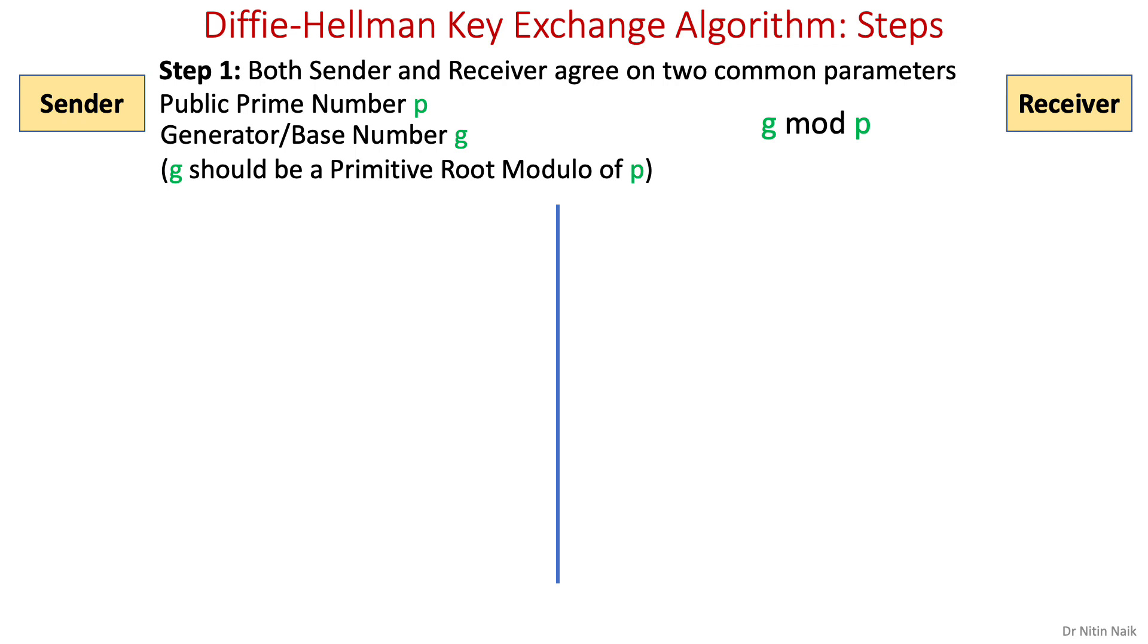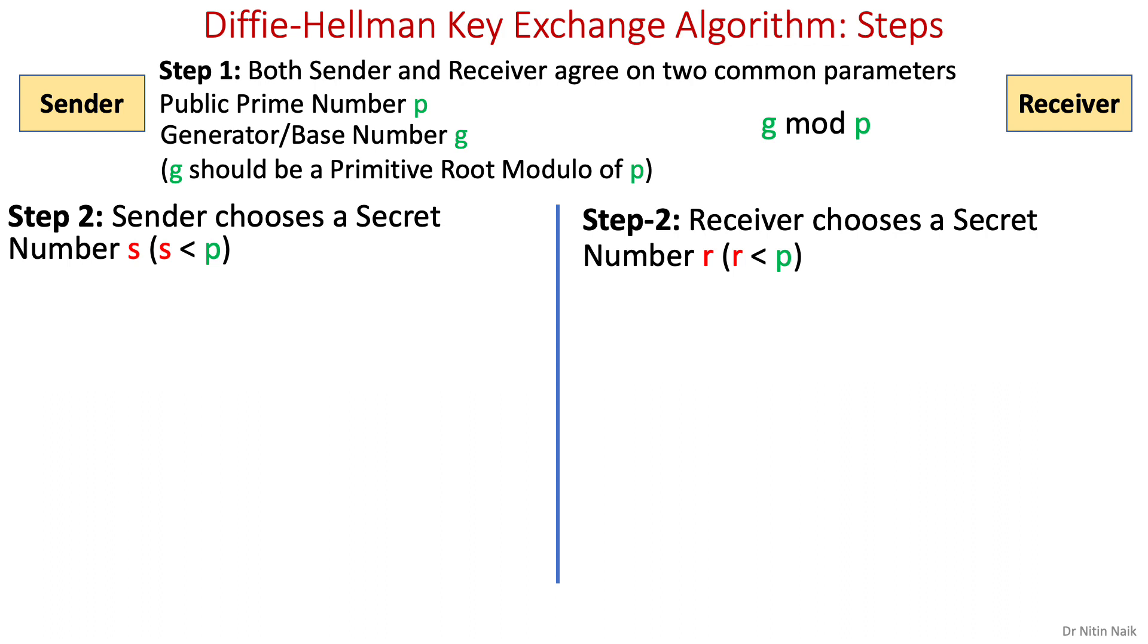In step two, we choose a secret number. So, sender chooses a secret number s and receiver chooses a secret number r. Both must be smaller than public prime number p. Obviously, these secret numbers are not revealed to each other.